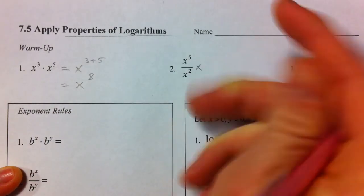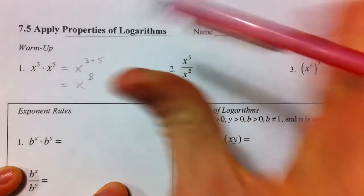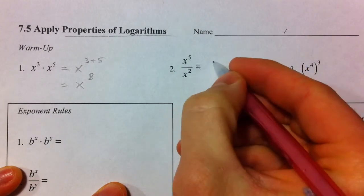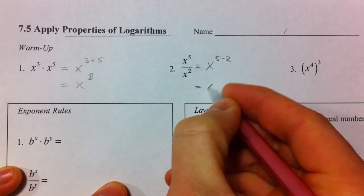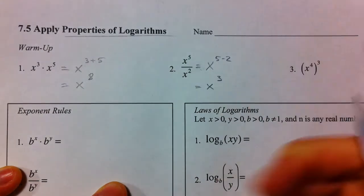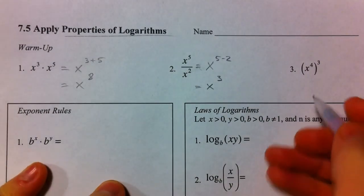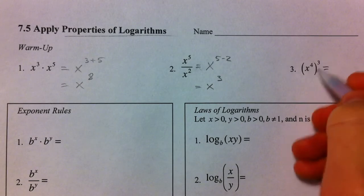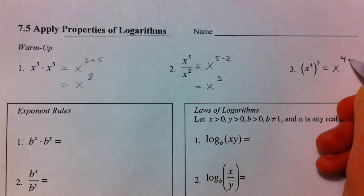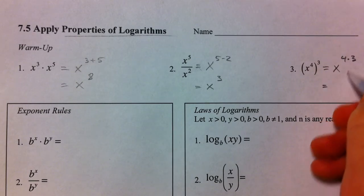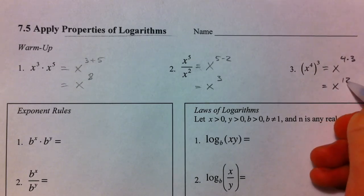Here, we subtracted the exponents. x to the 5th divided by x squared, we did x to the 5th minus 2 and got x to the 3rd. And x to the 4th raised to the 3rd is when we multiplied it, raised a power to a power, and so that's when we get x to the 12th.